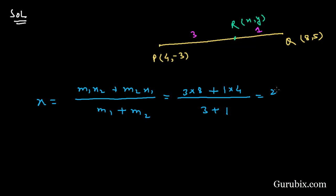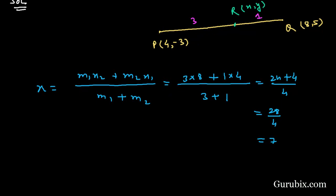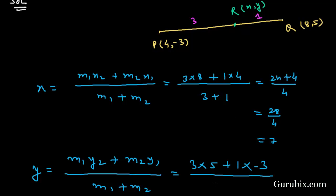And this is equals to 24 plus 4 over 4, which means 28 over 4, which means 7. And the y coordinate is equal to m₁y₂ plus m₂y₁ over m₁ plus m₂. This means we shall multiply 3 with 5, so 3 times 5 plus 1 times -3 over 3 plus 1.